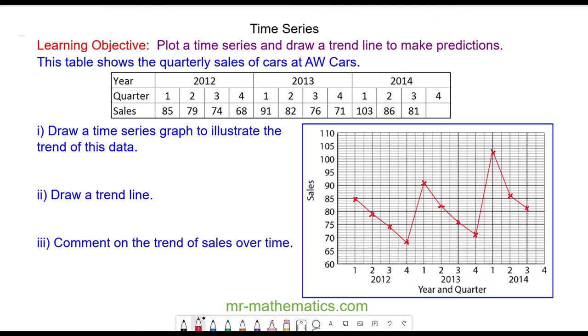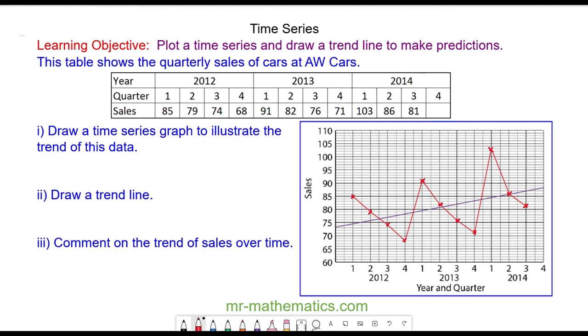For part two we can now draw a trend line which is a straight line which shows the trend of the data. For part three, to comment on the trend of the sales over time, we can say the sales are increasing.